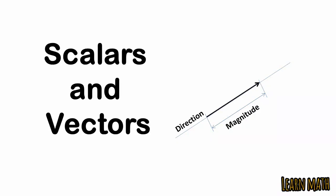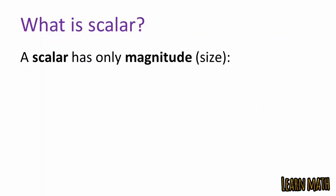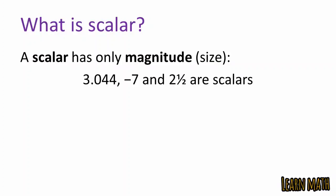In today's video we will discuss scalars and vectors. A scalar has only magnitude, that is size. For example: 3, 0.44, minus 7 — these are all scalar quantities.